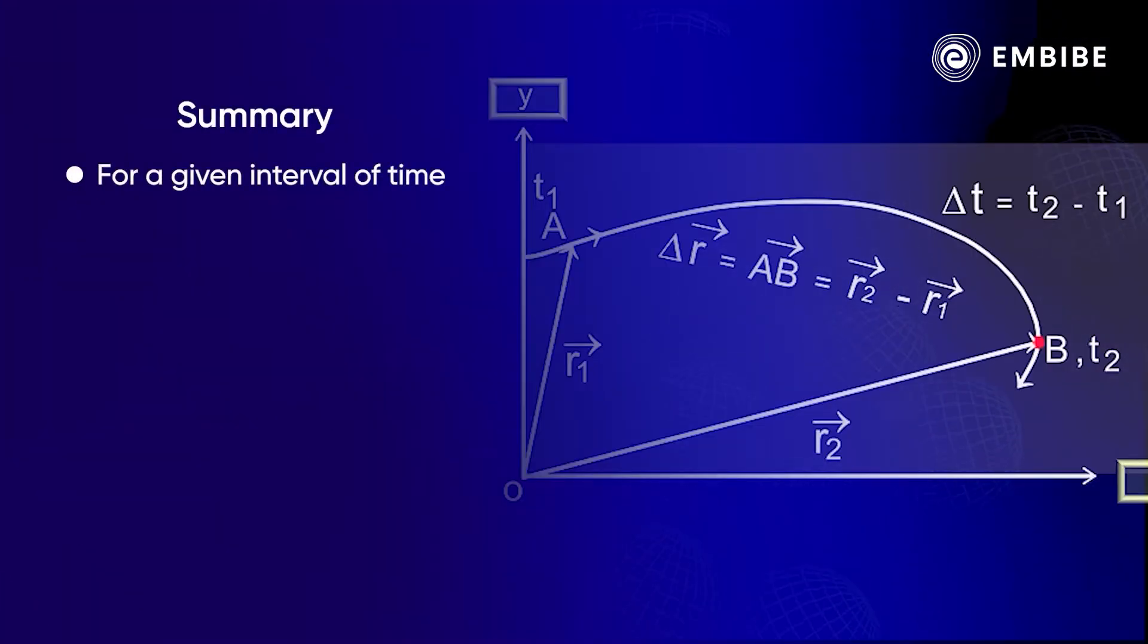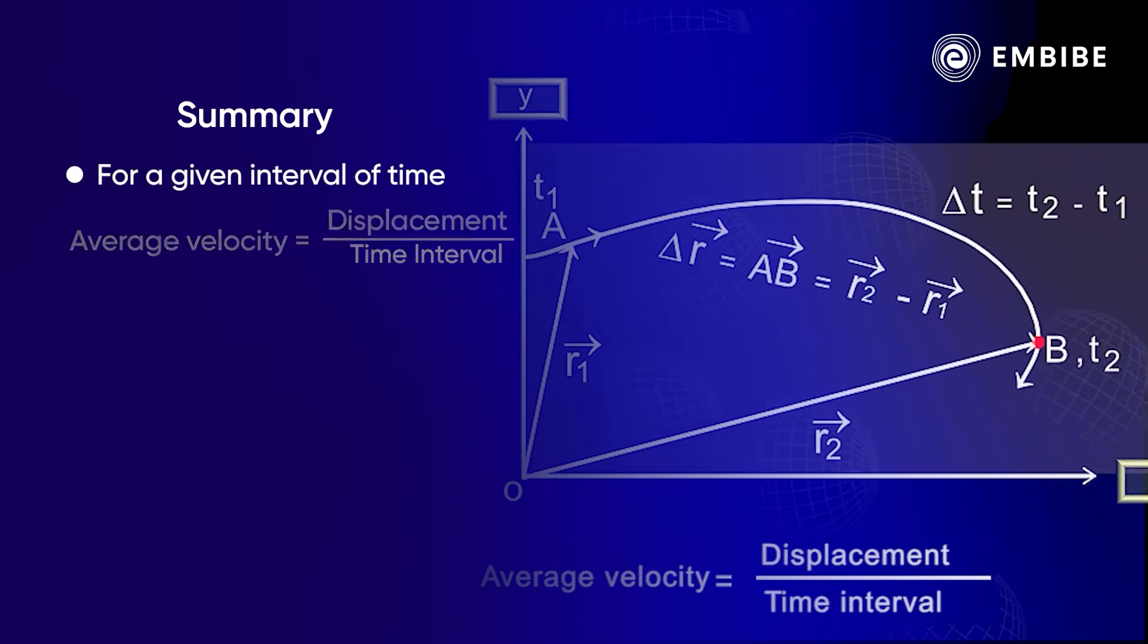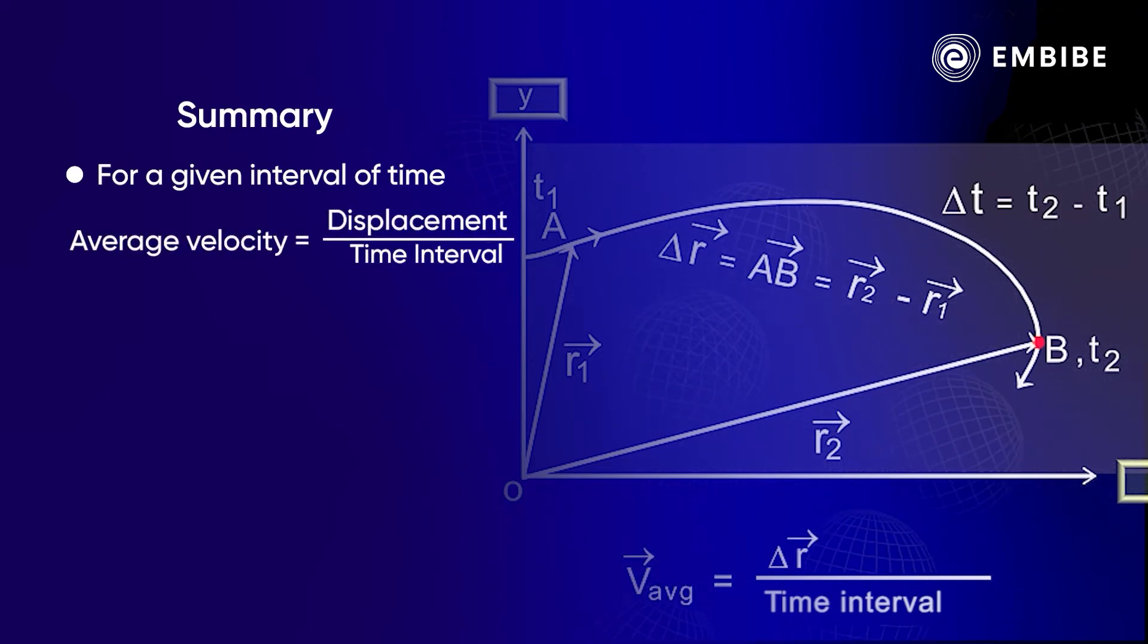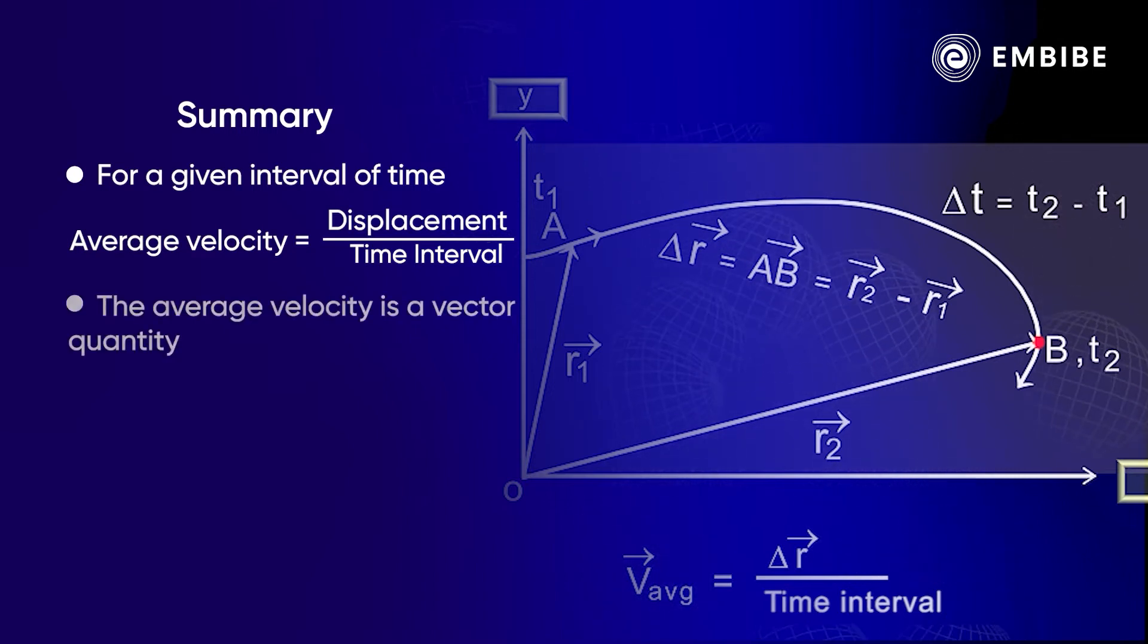Summary: Let us summarize what we have learned in this video. In this video we learned that for a given time interval, average velocity is defined as displacement of object over time interval. This is a vector quantity. We also learned that the SI unit of velocity is meter per second.